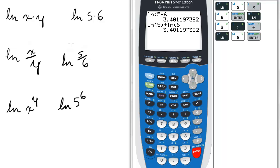We get the same thing. So ln of x times y is basically the ln of x plus the ln of y, found out through your calculator.